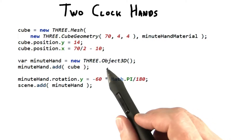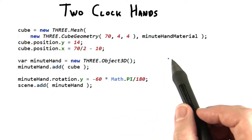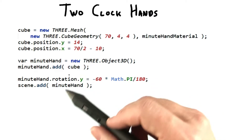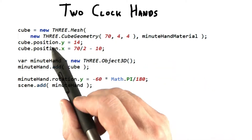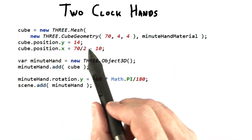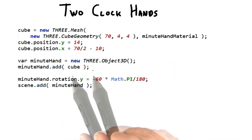You'll need to use an Object3D to let you rotate after translation. Here's my solution for the minute hand. The cube is translated to the correct pivot point by the position — that doesn't change.